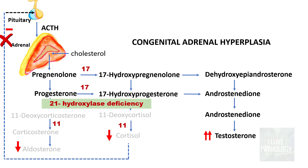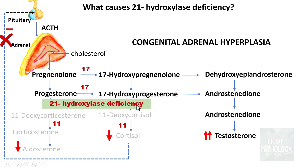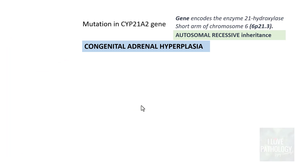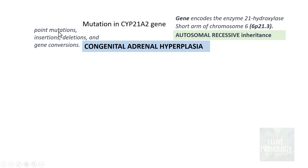The most important cause of 21-hydroxylase deficiency is a mutation in the CYP21A2 gene, which codes for the enzyme 21-hydroxylase. This is an autosomal recessive inheritance. The gene for 21-hydroxylase is situated on the short arm of chromosome 6. Mutations can be point mutations, insertions, deletions, and gene conversions.